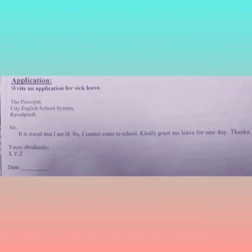Write: City English School, Rawalpindi — capital R. After 'sir' write a comma. Then write: 'It is stated that I am ill.' Full stop. This means you are telling them that you are sick.